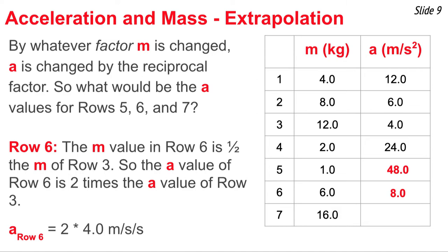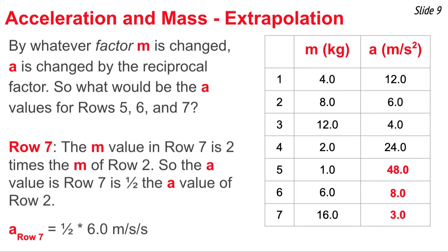Looking at row 7, its mass is twice the mass of row 2. The reciprocal of 2 is one-half, so to find the row 7 acceleration, we take the row 2 acceleration and halve it. That gives us one-half of 6, or 3 meters per second squared. Once we find the ratio by which the mass is changed, we take the reciprocal ratio and change the acceleration by that reciprocal factor.